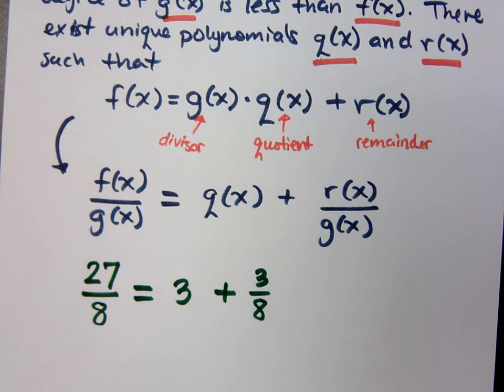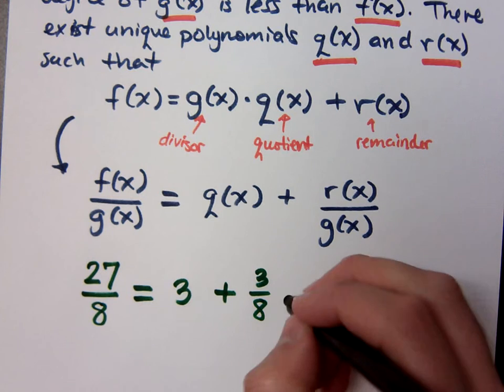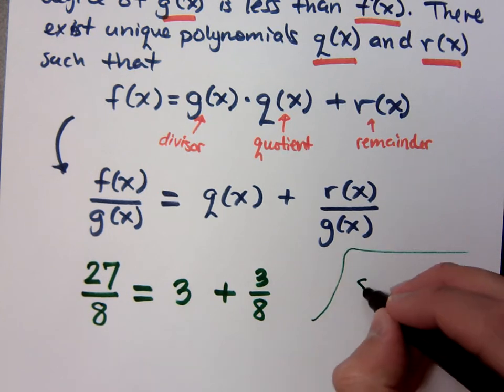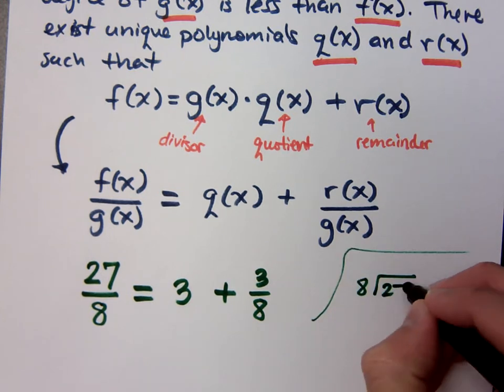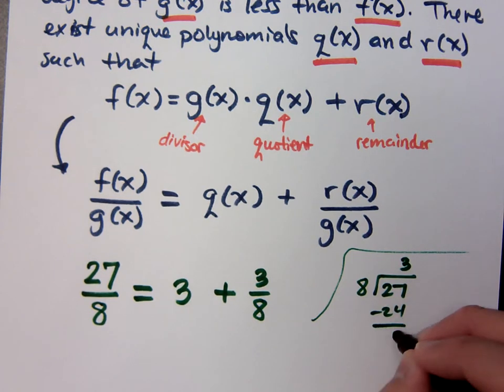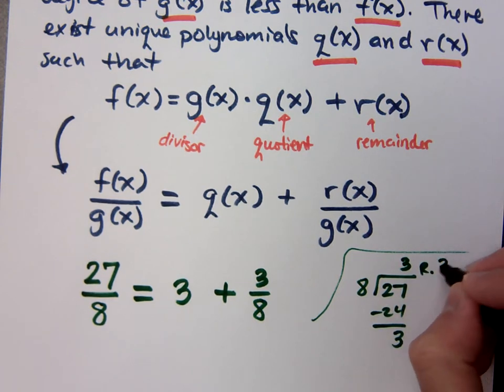This is just fractions, stuff you know. If you're not sure about this, see it up here on the side. 8 divides into 27, it goes in three times with a remainder of three.